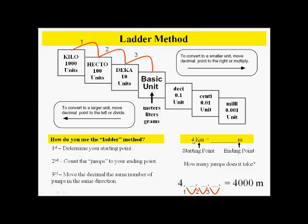So my starting number was 4. I moved 1, 2, 3 jumps from kilo to my basic unit. I took my starting number and moved that decimal over 1, 2, 3 units to the right, just like I did on my ladder. I fill in my spaces with zeros. And my ending point is now 4,000 meters.